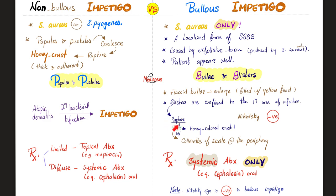Bullous impetigo can rupture into honey-crusting lesions just like the non-bullous type. These honey crusts have a collarette of scales at the periphery of the lesion. The treatment is systemic only, because this disease is more severe. Please don't forget that the Nikolsky sign is negative with bullous impetigo. It will also be negative or even inapplicable in non-bullous impetigo — because if you do not have a bulla, what would you puncture?